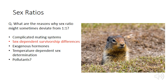Sex-dependent survivorship differences occur where males in a population suffer higher mortality than females. In ground squirrels, for example, which can live in fairly dense populations, it tends to be males that disperse from their natal sites to establish colonies in different areas. This risk-taking behaviour leads to higher mortality in males than females, which can skew the sex ratio in populations.